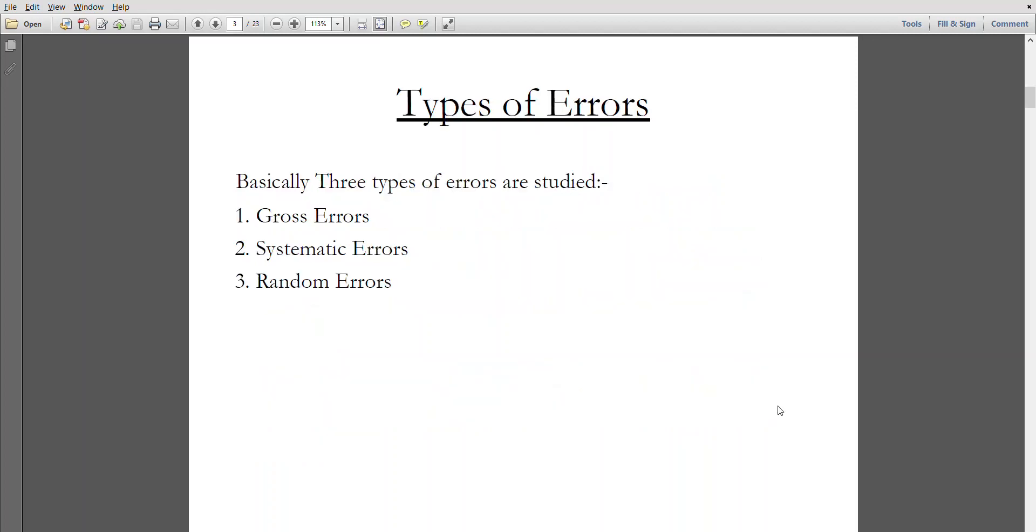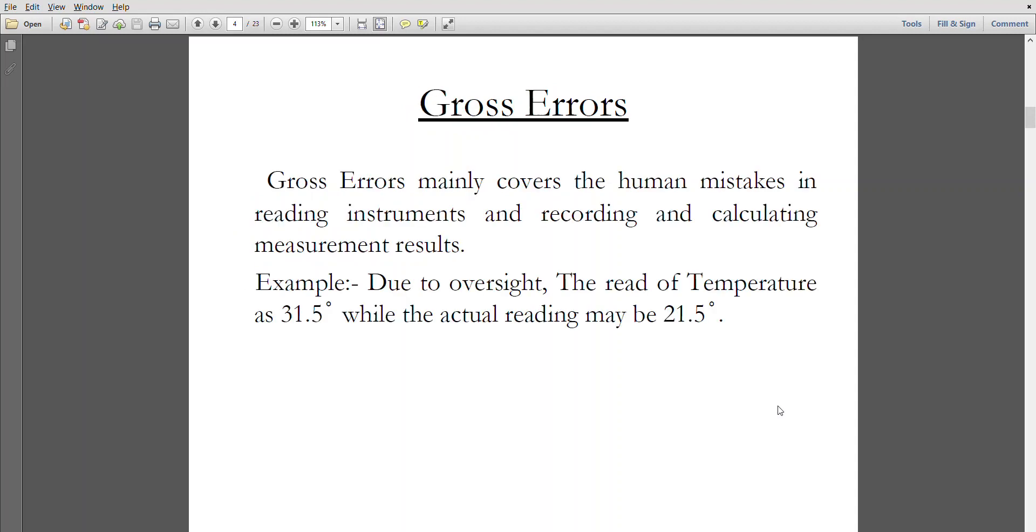Types of errors. Basically there are three types of errors: gross errors, systematic errors, and random errors. Gross errors covers the human mistakes in reading the instruments and recording and calculating measurement results.